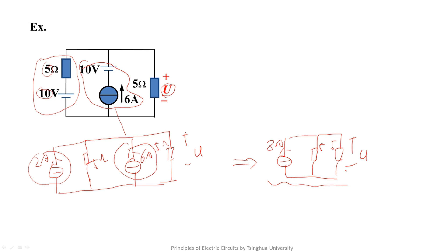For this point, we can use the current divider discussed in lecture 12. Obviously, this is 4A and U equals 4 times 5 equals 20V. Then, the solving of the problem is over.